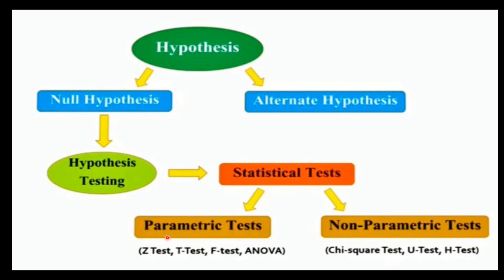In parametric tests, Z test, T test, F test and ANOVA come. In non-parametric tests, we have chi-square test, U test and H test. Now our aim is to study ANOVA.